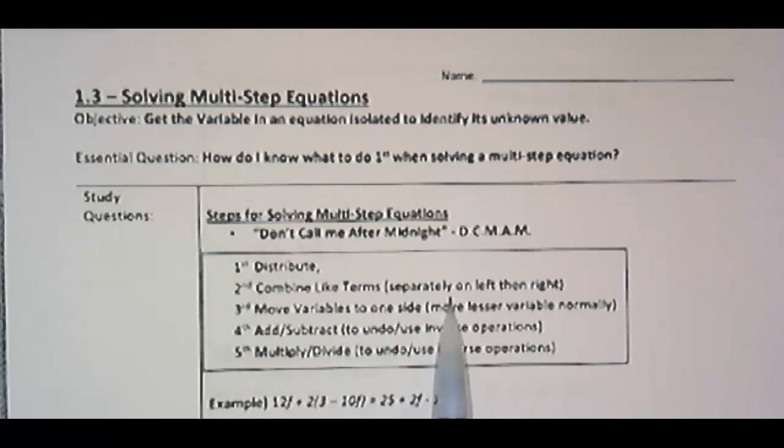And basically what DCMAM does is it breaks down some steps for solving multi-step equations. First is distribute, second, combine like terms. We will do this separately on the left or on the right side of the equation. Third, move the variables to one side.